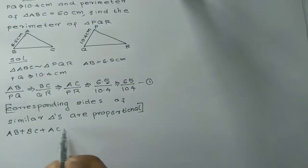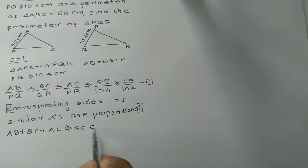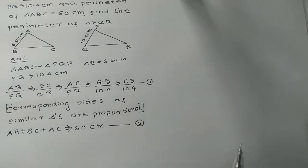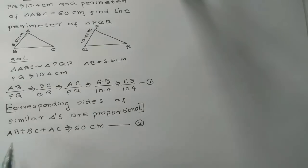Looking at the sides AC and BC, the perimeter of triangle ABC is 60 cm. We are going to identify this — it is straightforward. We make the equations and use them to find what we need to solve the problem.